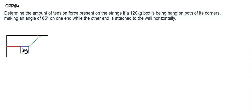Let's illustrate the problem. We have one string attached to the ceiling that makes 65 degrees, and then the other one is attached to the wall horizontally. You can also have another illustration that looks like the opposite — the box on the other side — especially since it's not specified on which side. Either way, we can get the same value if the illustration and free body diagram are labeled properly.